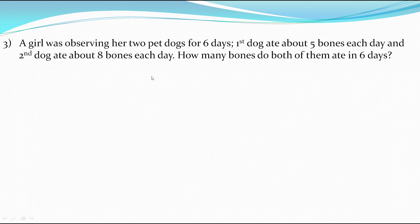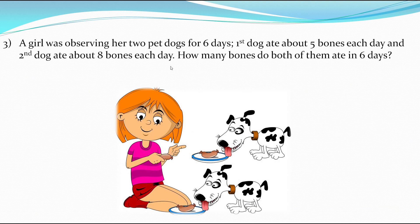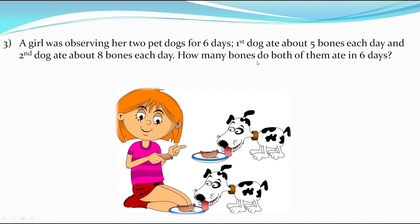The third situation involves a girl observing her two pet dogs for 6 days. The first dog ate about 5 bones each day and the second dog ate about 8 bones each day. How many bones do both of them eat in 6 days? We add the number of bones and then multiply by 6, so this situation is also matchable with the given expression.